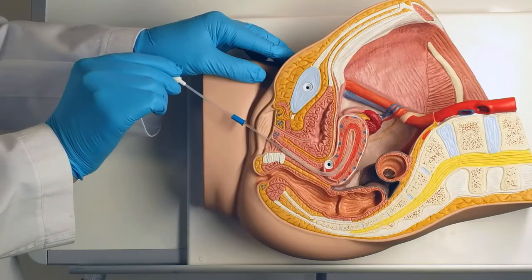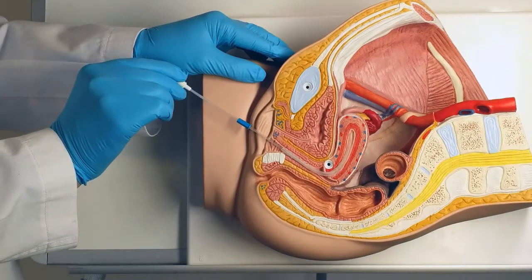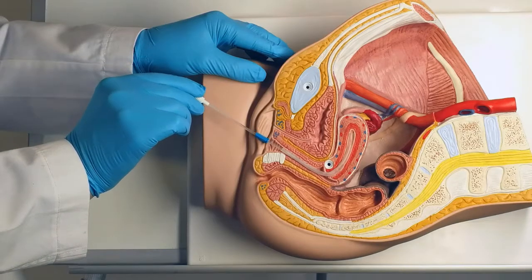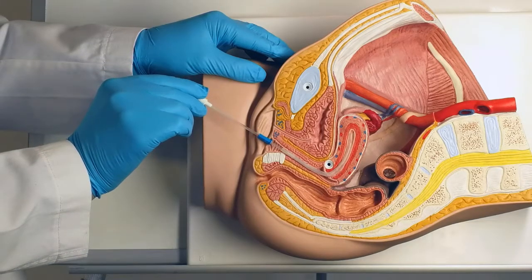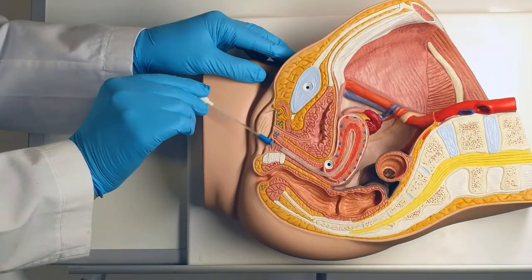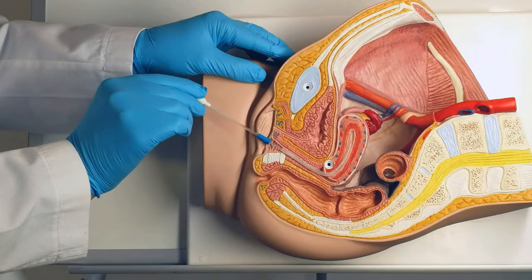When introducing the catheter into the vagina, avoid any contact with the vaginal walls. Then it will enter through the cervical os to the uterus. Avoid touching the uterine fundus or scratching the walls of the uterus.